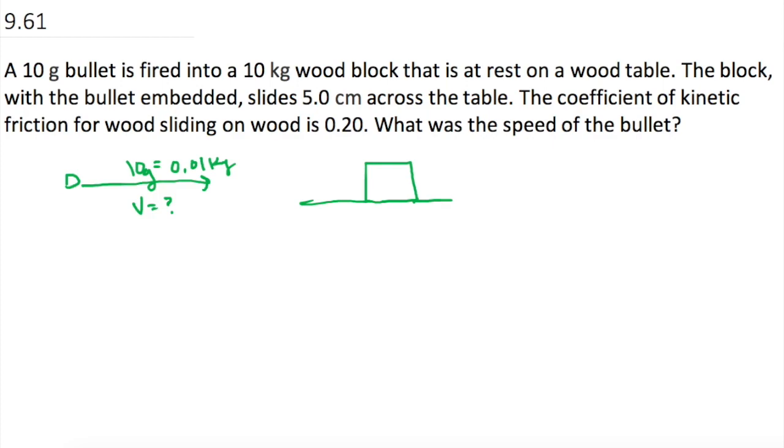The block, the mass is 10 kilograms, and it slides 5 centimeters across the table. They tell us the coefficient of kinetic friction, so mu sub k is equal to 0.2. What is the speed of the bullet?